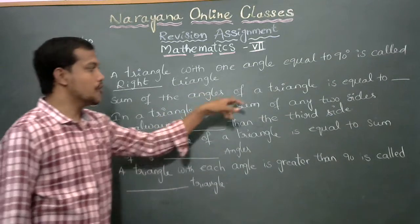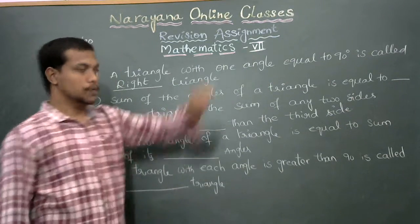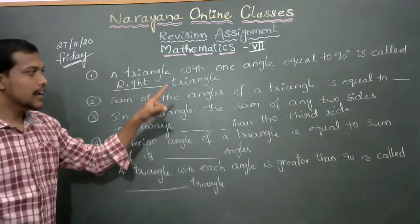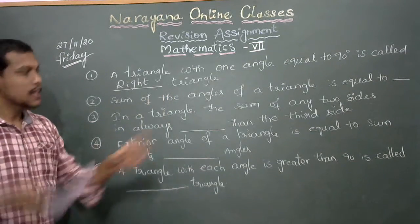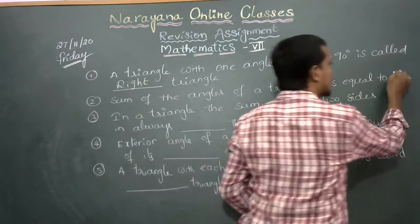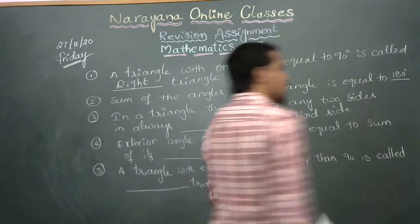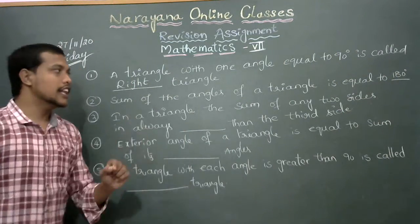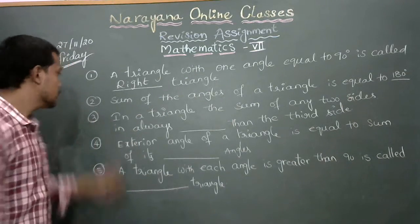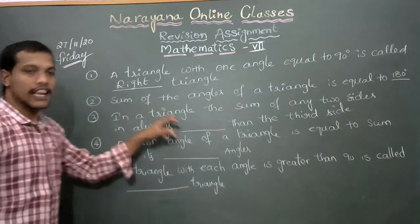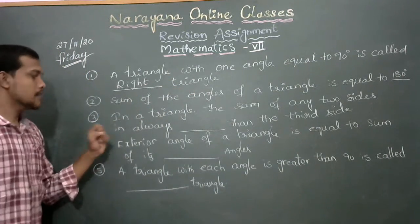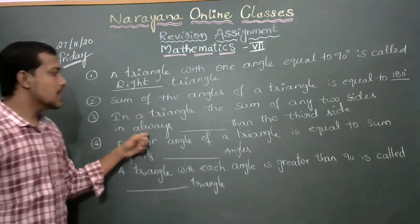Second one: the sum of the angles of a triangle is equal to 180 degrees. If you take any triangle, the interior angles of the triangle always add up to 180 degrees.